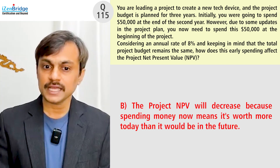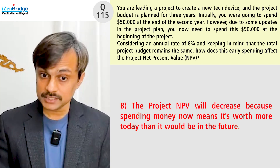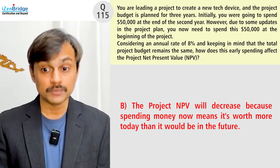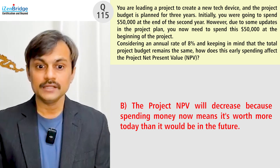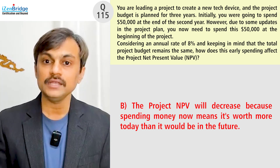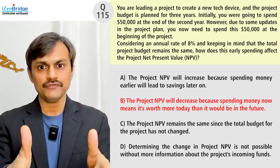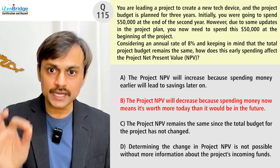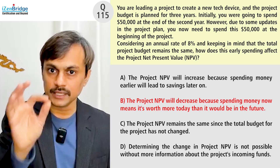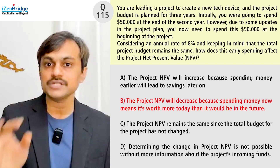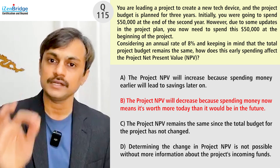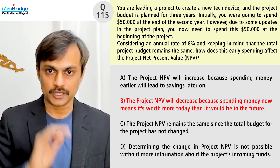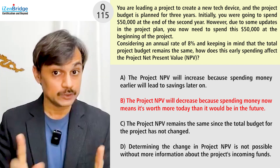Option B: the project NPV will decrease because spending money now means it's worth more today than it would be in the future. That's correct — that's option B. We need to understand that the intent of this question is to check the project manager's understanding of net present value, not the calculation.